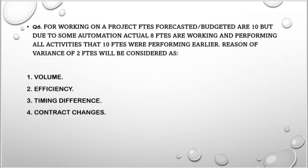Question 6: For working on a project, the forecasted or budgeted FTEs are 10, but due to some automation, actually only 8 FTEs are working and performing all the activities that 10 FTEs were performing earlier. Some automation has taken place so that only 8 FTEs can now perform all the work. The reasons for the variance of 2 FTEs will be considered as: (1) Volume, (2) Efficiency, (3) Timing difference, (4) Contract changes.